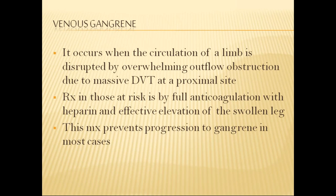Venous gangrene occurs when the limb circulation is disrupted by overwhelming outflow obstruction due to massive DVT at a proximal site. Treatment requires full anticoagulation with heparin and effective evaluation of the affected limb. This management prevents progression of gangrene in most cases.